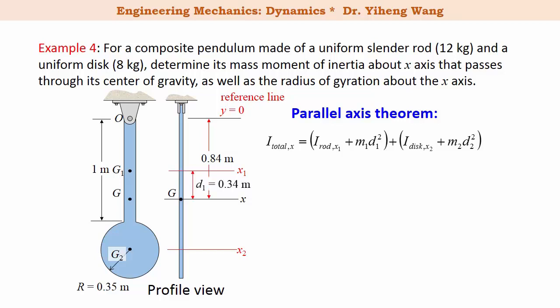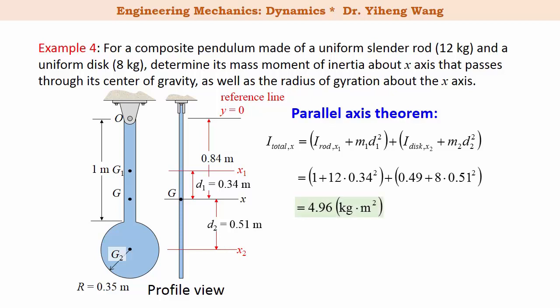d-one is the perpendicular distance between the x-one axis and the x axis; d-two is the perpendicular distance between the x-two axis and the x axis. Substituting all numbers into the parallel axis theorem equations and adding the two contributions, we obtain the total mass moment of inertia of this pendulum about the x axis passing through its mass center G. We also calculate the radius of gyration about the same axis using k equals the square root of I divided by total mass. This completes the problem.